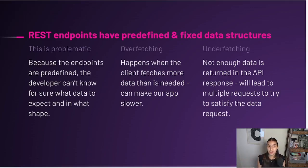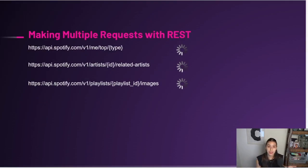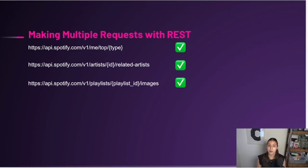On the other side, underfetching is another problem we experienced too. It's when you're not getting all the data you want from an endpoint, so you have to make another request. For top artists and related artists, those were two separate requests — but what if that was one endpoint where the response gave us both? That was underfetching because we didn't get what we wanted in one call, so we had to make multiple calls. And when you're making multiple requests with REST, those requests are asynchronous — they don't all finish at the same time. So you might have your cover art but not your other data, and you can't show your app until all the requests have fulfilled.